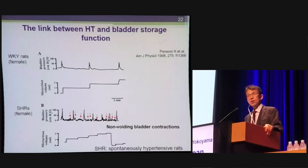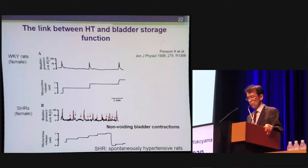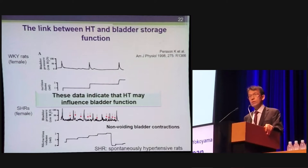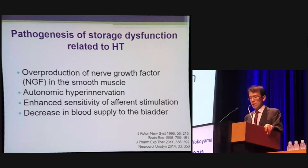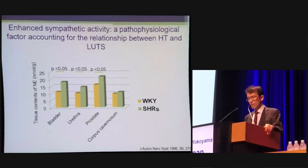Compared with Wistar-Kyoto rats, spontaneously hypertensive rats (SHR) had a significantly lower bladder capacity and increased amplitude of non-voiding bladder contractions. These data indicate that hypertension may influence bladder function. SHR is considered a valuable tool for exploring the pathogenesis of storage dysfunction related to hypertension. One pathogenesis is overproduction of NGF in smooth muscle; others are autonomic hyperinnervation, enhanced sensitivity of efferent stimulation, and decreased blood supply to the bladder. Enhanced sympathetic activity is one of the pathophysiological factors accounting for the relationship between hypertension and bladder dysfunction.